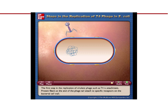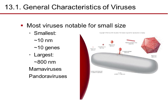If you download the PowerPoint off D2L and set it to slideshow, you can look at the steps of replication of a T4 phage in E. coli. Most viruses are small in size. The smallest is about 10 nanometers with about 10 genes; the largest is about 800 nanometers, ranging from mammoviruses to Pandoraviruses. Look at the poliovirus — how small it is compared to E. coli, for instance.